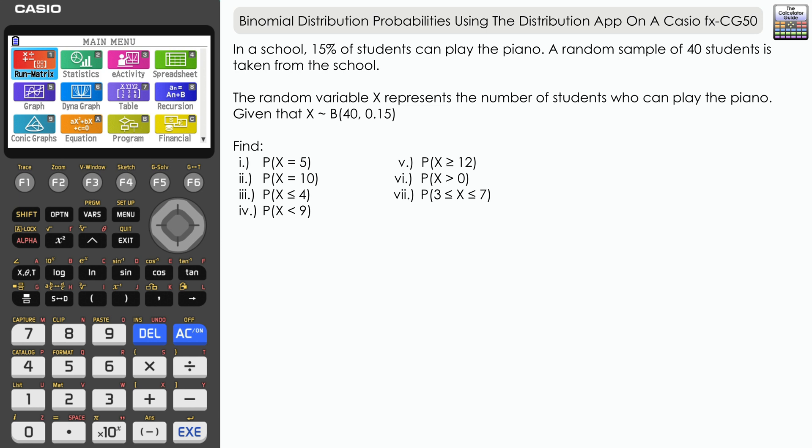Now we've got quite a number of probabilities here to explore. The chances are in a question you might find you may only have two or three to find, but I wanted to explore all the different ways that we can get a probability using the distribution app on the CG50.